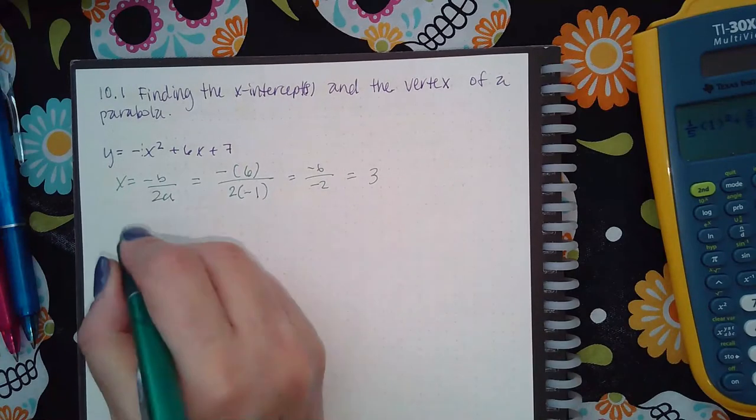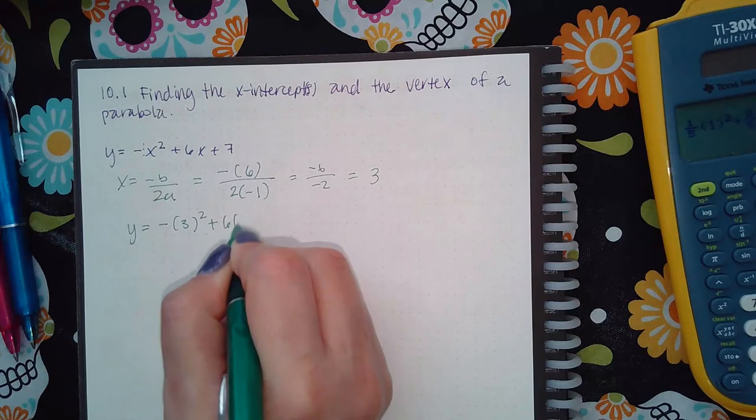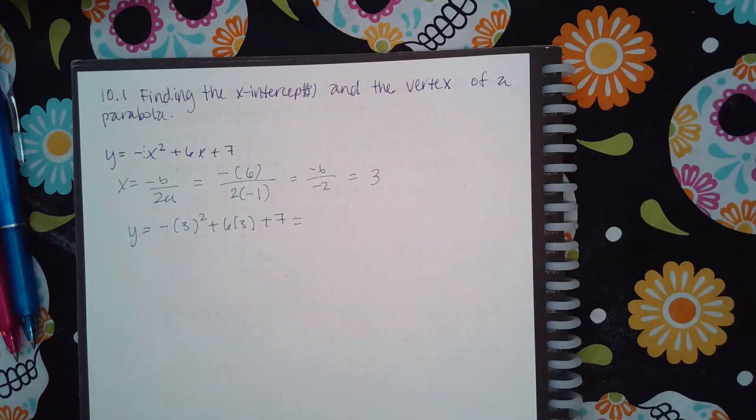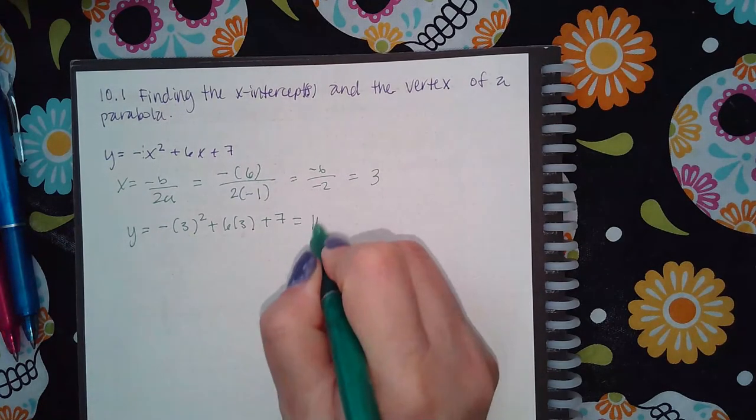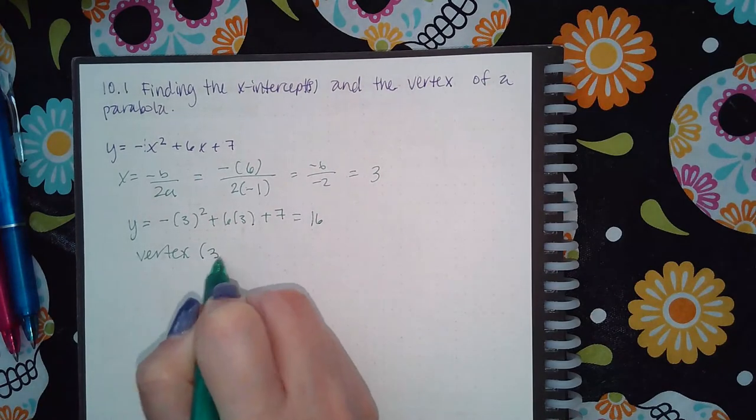That's the x value. So if I want the y value, I'm just going to plug in that positive 3. And I end up with 16. So the vertex here is going to be the point 3 and 16.